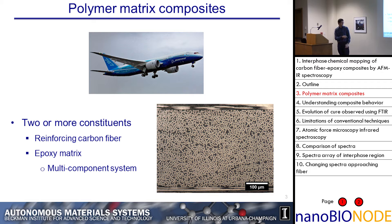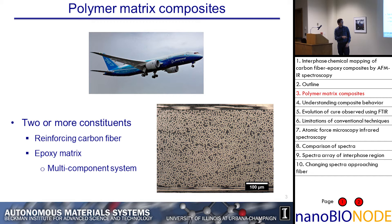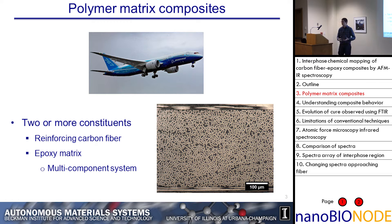I'd also like to point out that the epoxy matrix itself is also a multi-component system — it's something that you mix together and the two components will cure into your matrix. This is just a cross section of a typical carbon fiber composite, where there's a fiber volume fraction of about 60% fibers and around 40% matrix material that distributes the load.